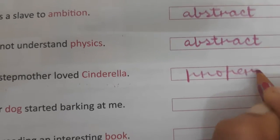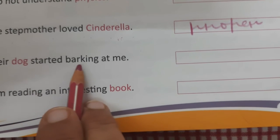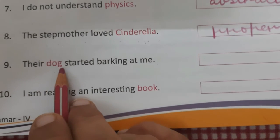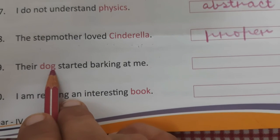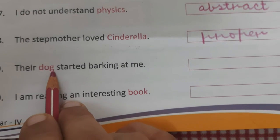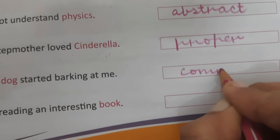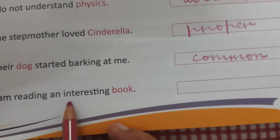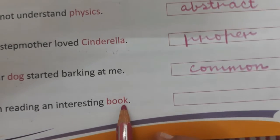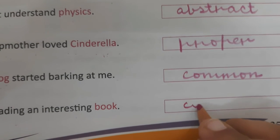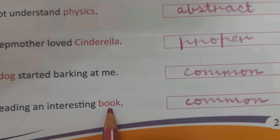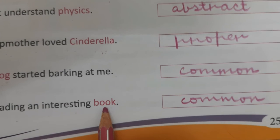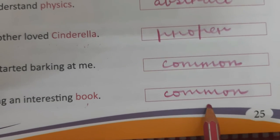Number 9: A dear dog started barking at me. 'Dog' is a common noun because it's commonly used for a particular animal — there are many kinds of dogs. Number 10: I am reading an interesting book. 'Book' is also a common noun because this name is commonly used for a thing which is used for reading.